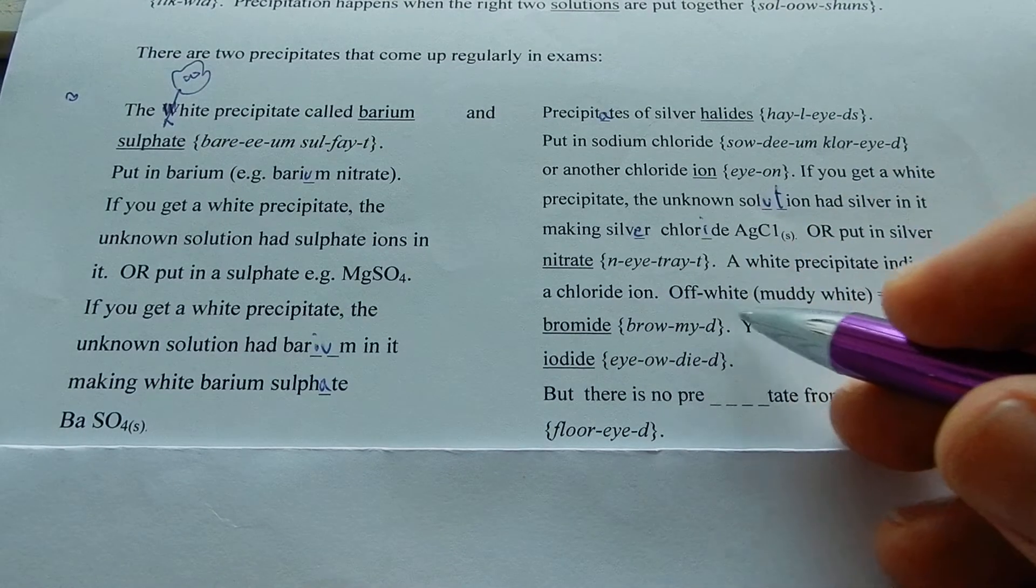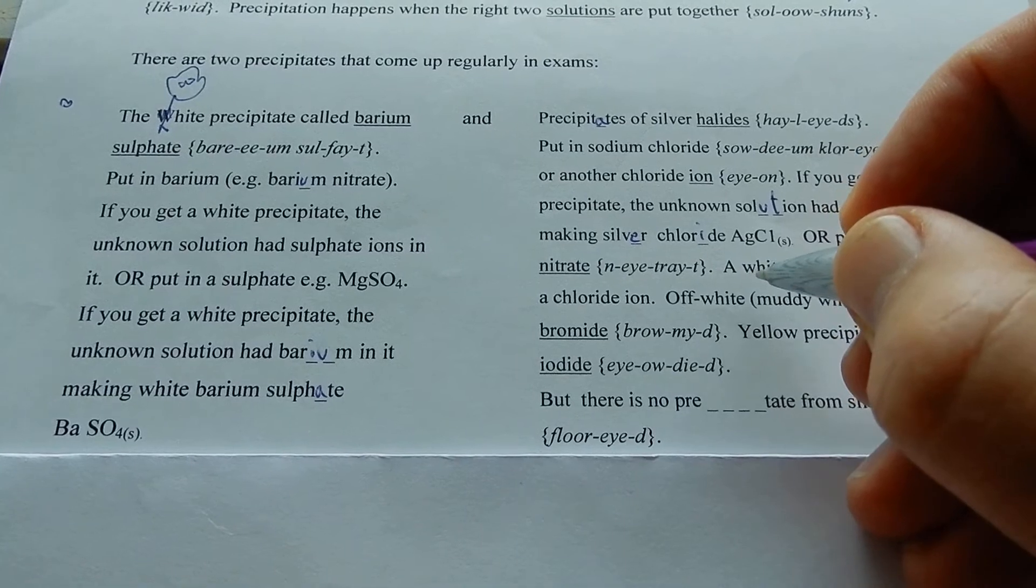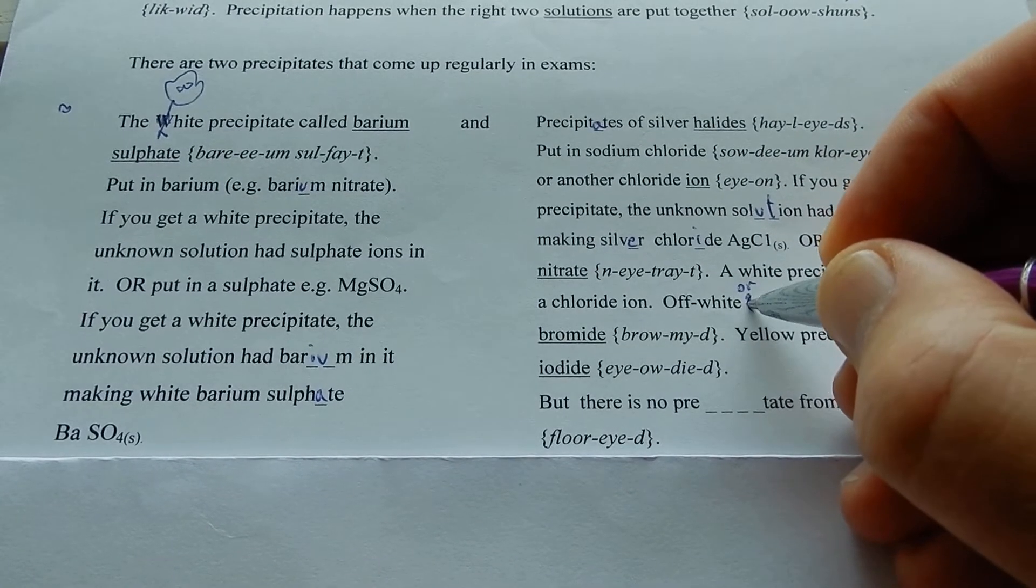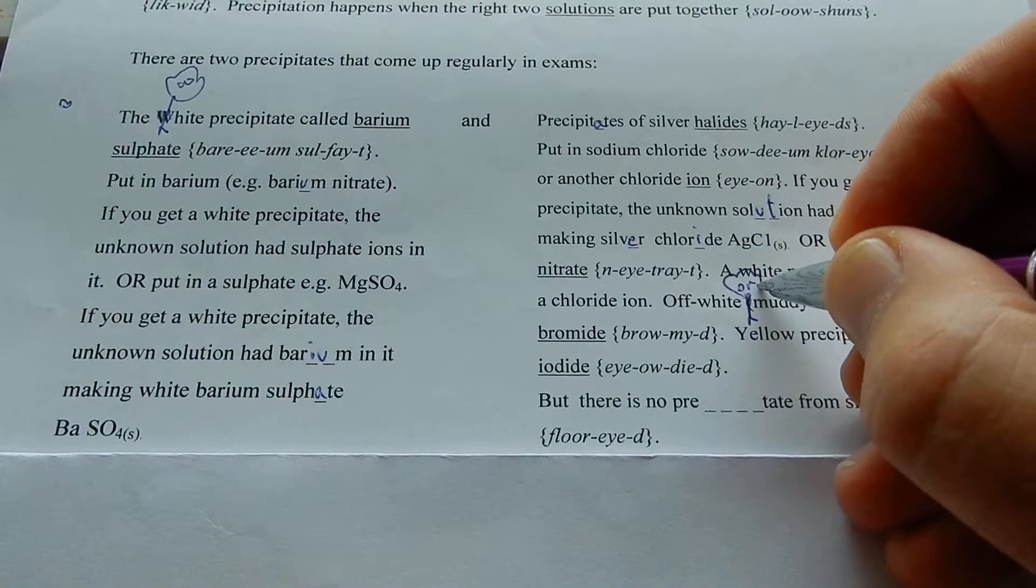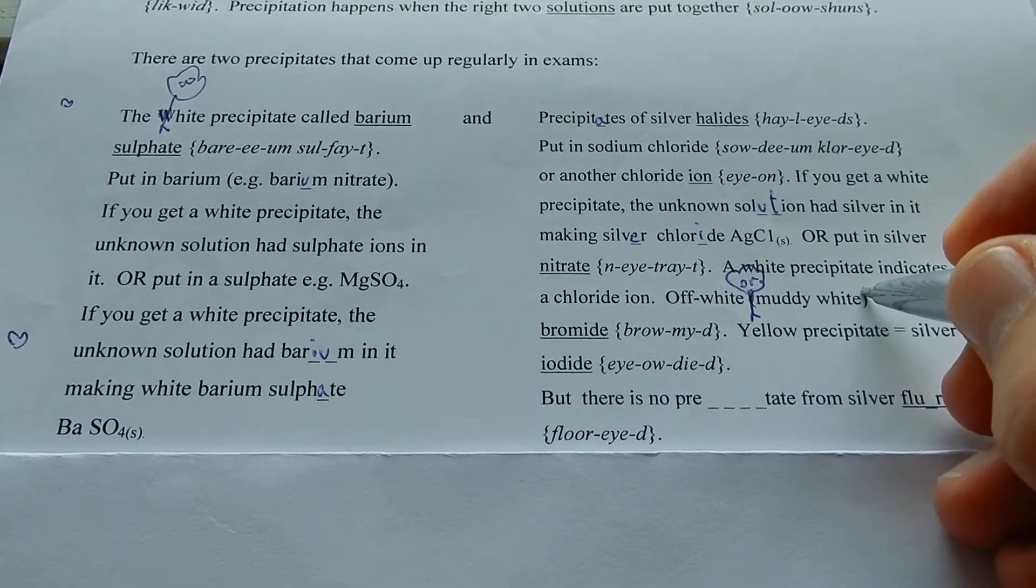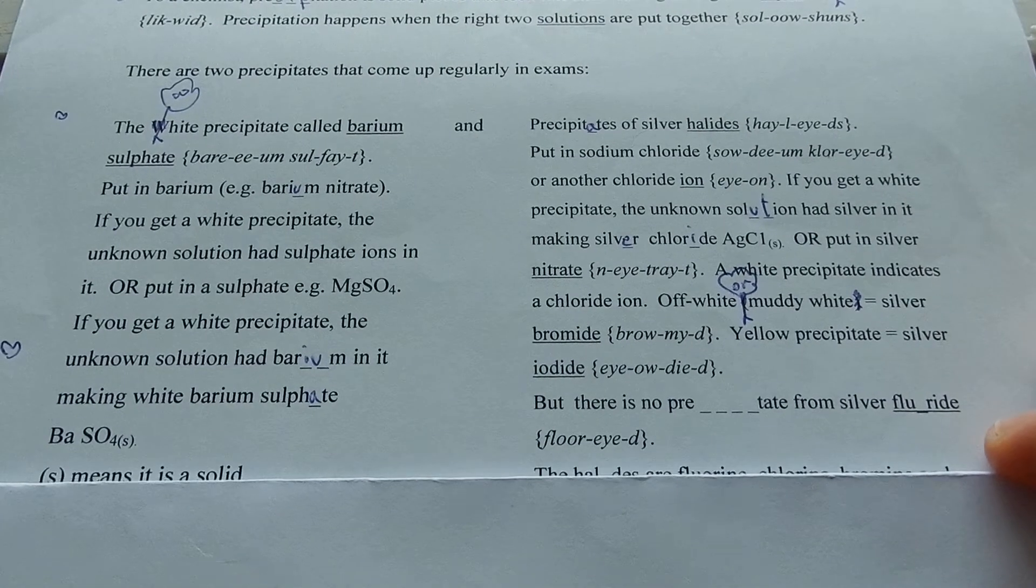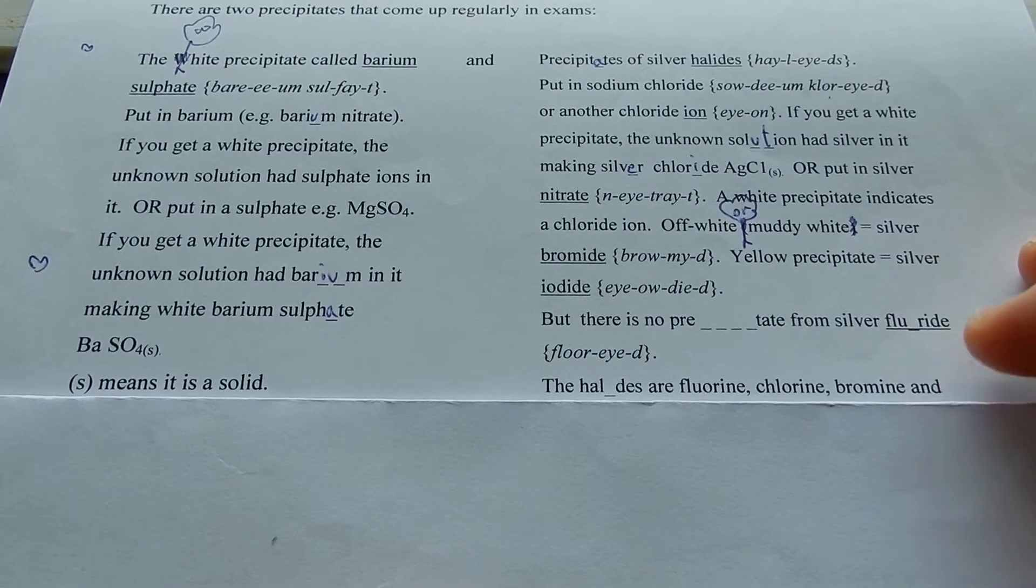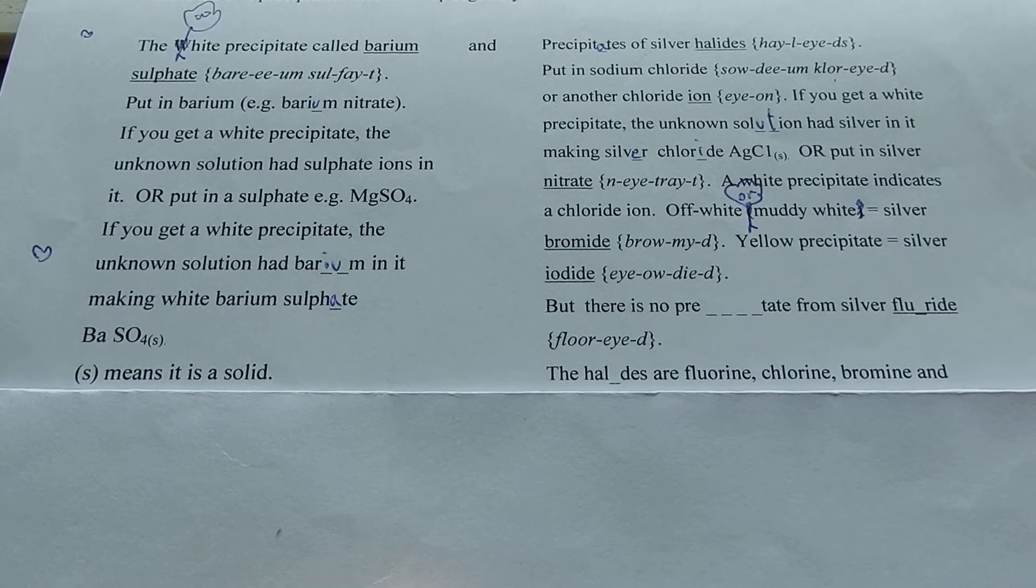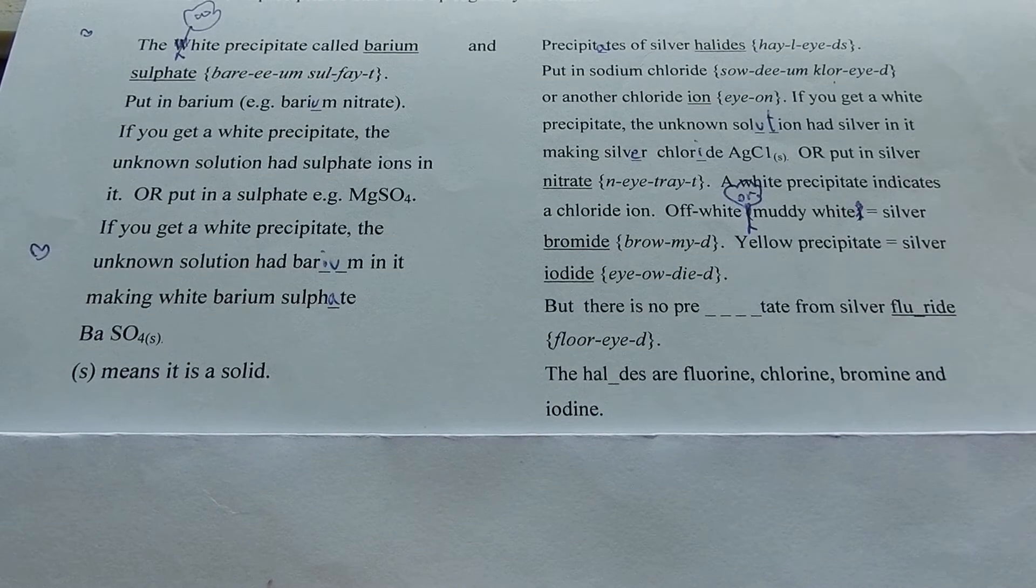Or put in silver nitrate. White precipitate indicates the chloride ion. Off-white (muddy white) equals silver bromide. Yellow precipitate equals silver iodide. But there is no precipitate for silver fluoride.